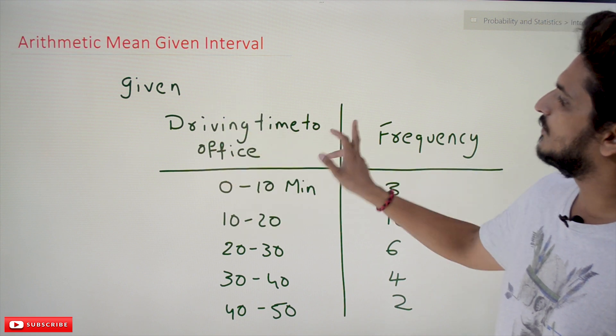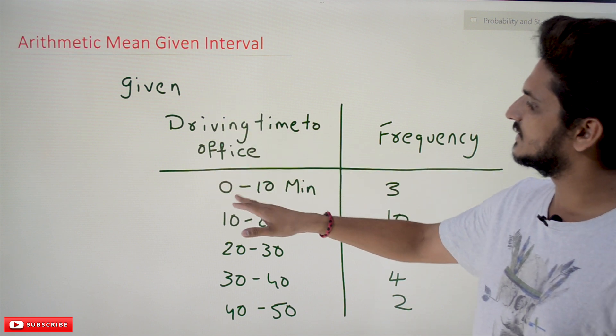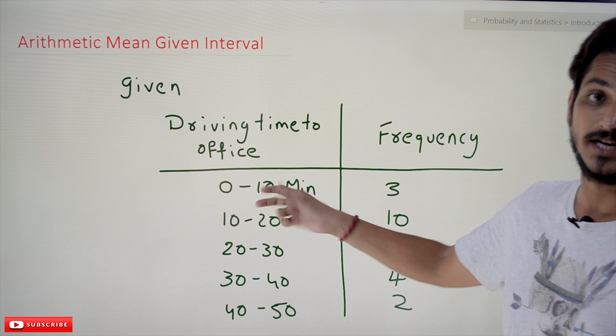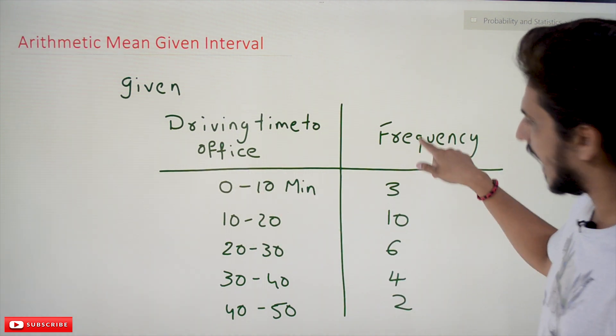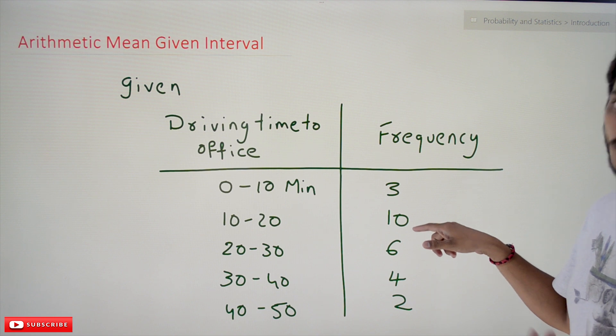So given the data is like this: driving time to office. It is given that 0 to 10 minutes intervals has been given, 0 to 10 minutes, 10 to 20 minutes, and they have given the frequencies also. If you want to calculate the arithmetic mean...